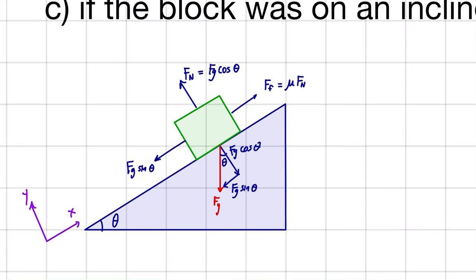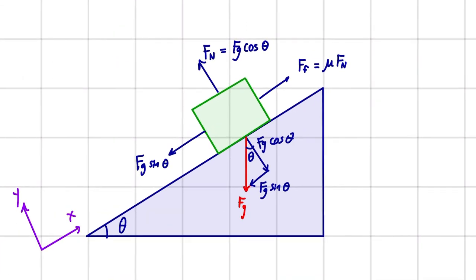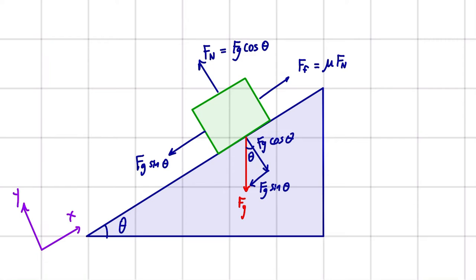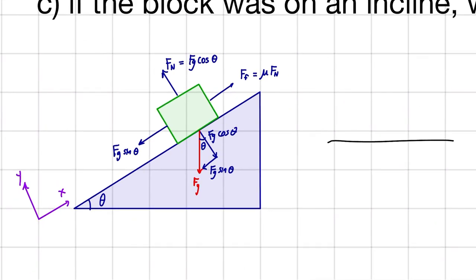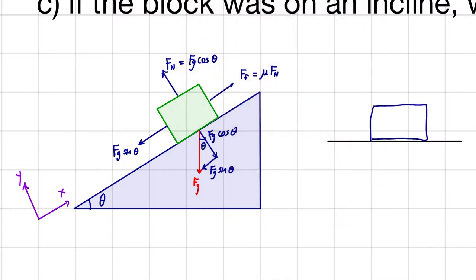The part here that I want to really make clear: notice that the gravity always goes straight down. We're used to, in a lot of examples, we've got a block sitting on the flat ground. We know gravity's straight down, normal force is straight up.